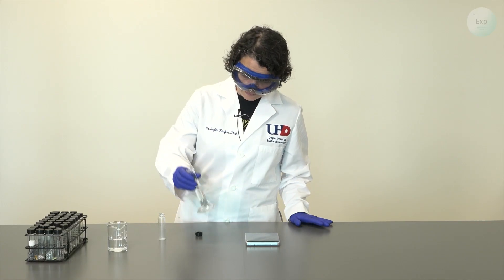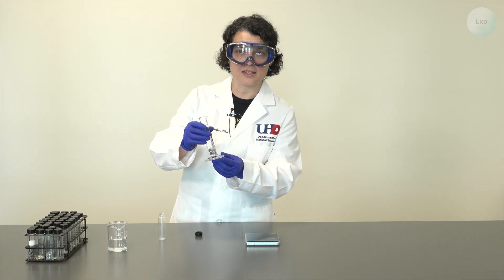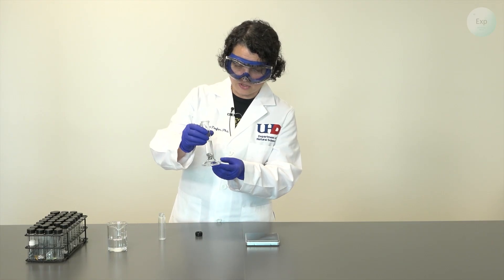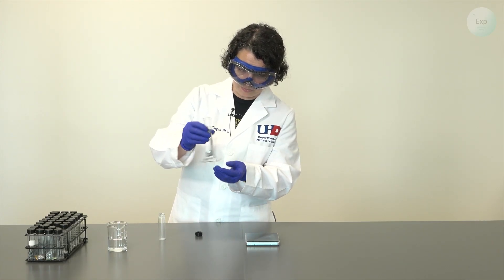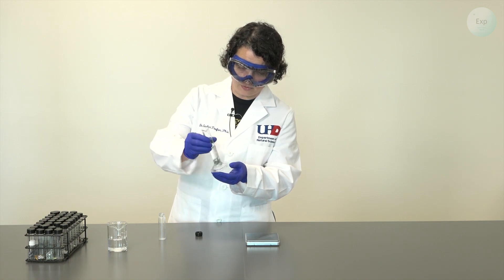Before we move further in our experiment we need to make sure that we didn't trap any air bubbles inside our graduated cylinder. So if it seems like there may be air bubbles we can shake it a little bit and then the air bubbles should come to the surface.